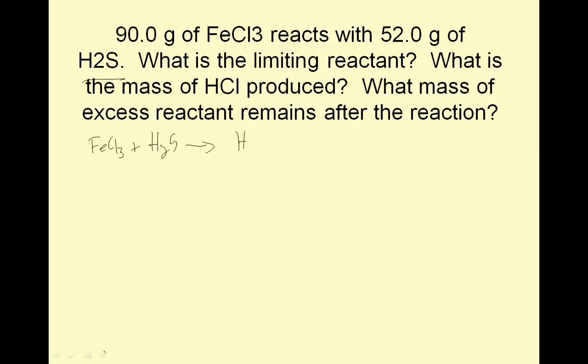So, FeCl3 plus H2S reacts to make HCl and FeS. This is mildly tricky because iron is 3+ and sulfide is 2-, so you get Fe2S3. I need to balance that. I have 3 chlorines. I'm going to put a 2 here to balance my irons. That gives me 6 chlorines. I'll put a 6 here. That balances my chlorines. I need a 3 here to balance my hydrogens. Sulfurs are good.